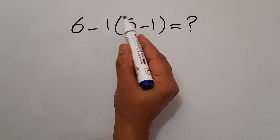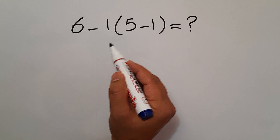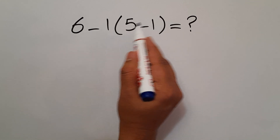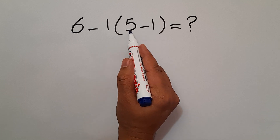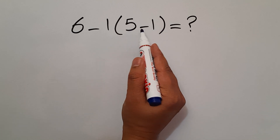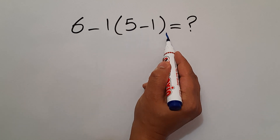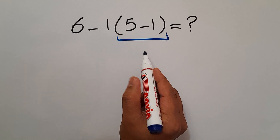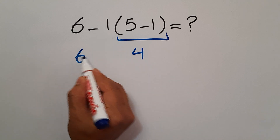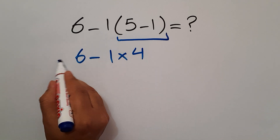As we know, parentheses have higher priority than other operations, so first we have to handle these parentheses. Inside these parentheses we have 5 minus 1, which equals 4. So, we now have 6 minus 1 times 4.